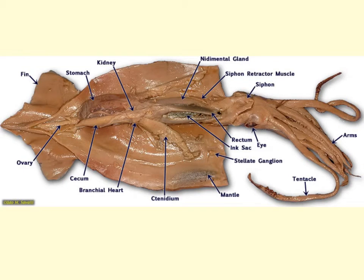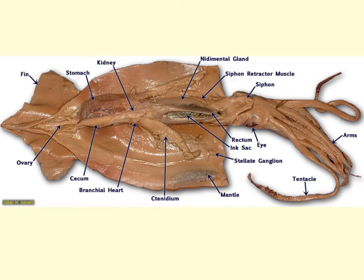Looking at the internal features of the squid, we start with the stomach, a sac-like organ located just dorsal to the systemic heart. We can also see the cecum, a large digestive gland attached to the stomach where the majority of digestion occurs. The ctenidia, or feather-like gills, are also visible — their feather-like appearance allows for more surface area to absorb oxygen from the surrounding water.